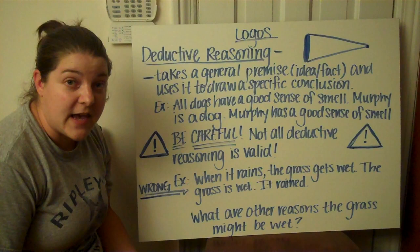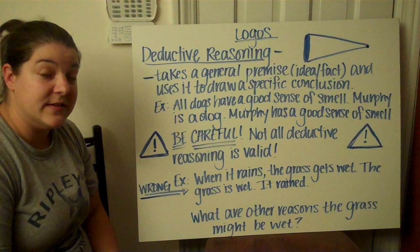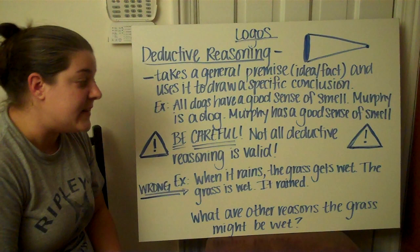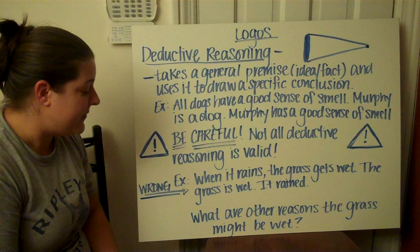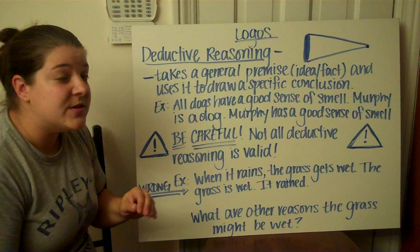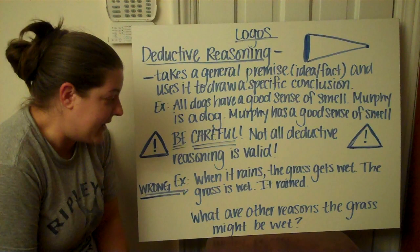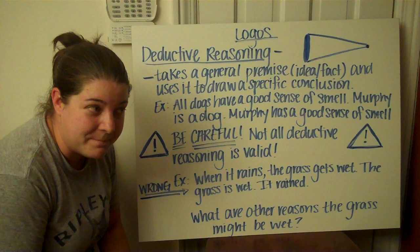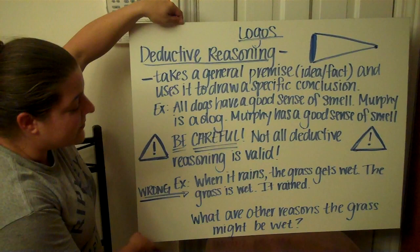But again, we must be careful, because not all deductive reasoning is valid. Here's an example of one that is wrong — if the premise is wrong, the conclusion will be wrong. 'When it rains, the grass gets wet. The grass is wet. It must have rained.' Maybe, but there could be other reasons — maybe dew, maybe someone had a sprinkler out, maybe someone's washing the car. All of those show that this statement is not valid.